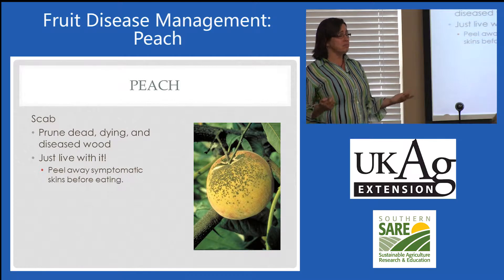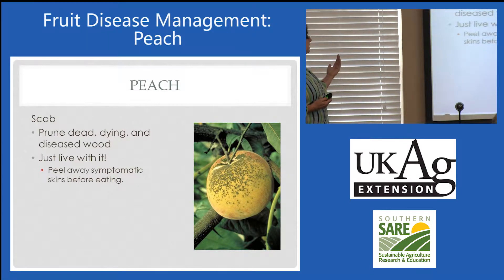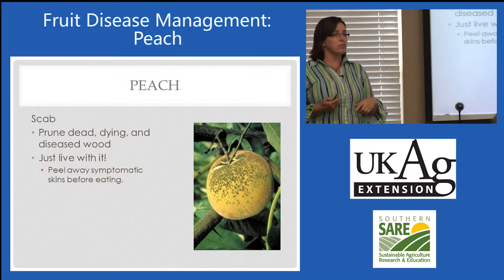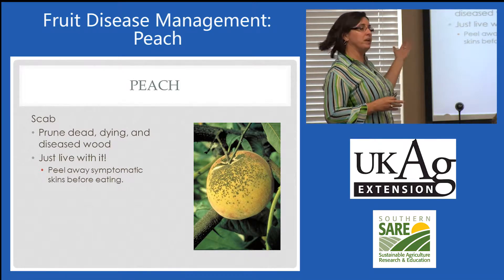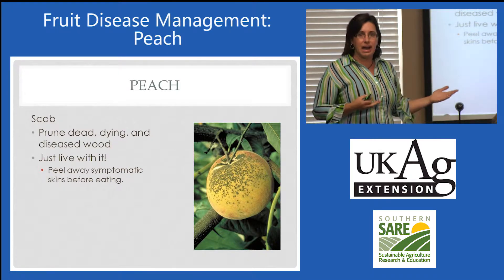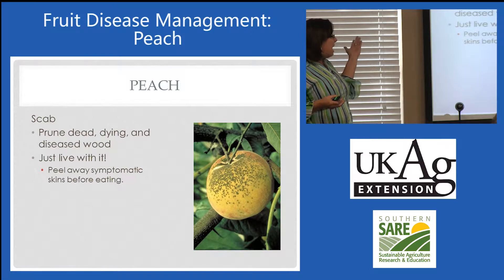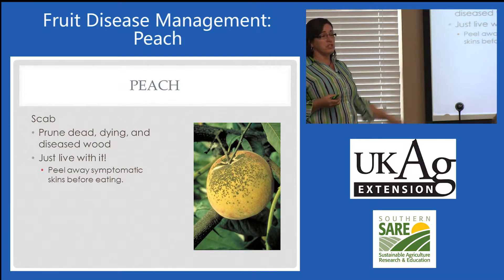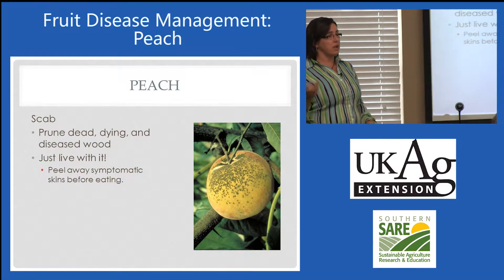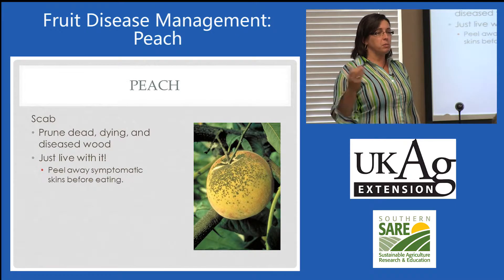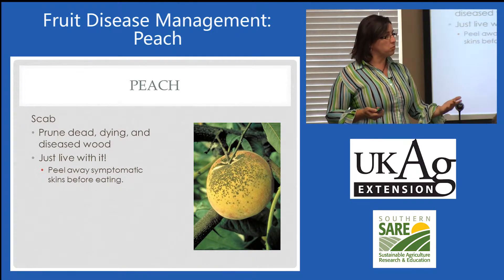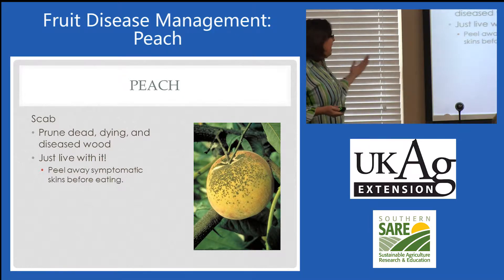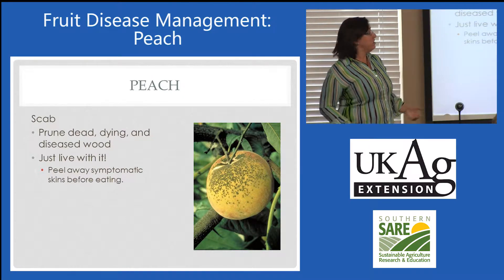Rainy years are much worse. We have no resistance to it because it overwinters in the dead, dying, and diseased wood. Prune that wood out and get it out of there — sanitation. And just live with it. This is a superficial pathogen — it's right on the skin, so a lot of people peel it off. They just don't think it's worth spraying for. It won't hurt anybody.